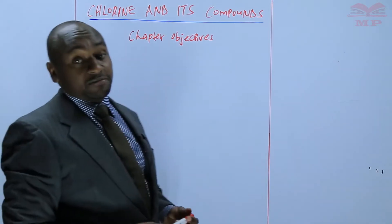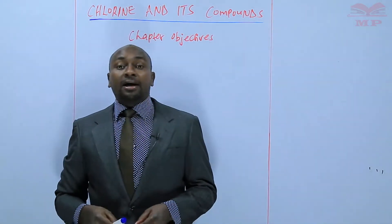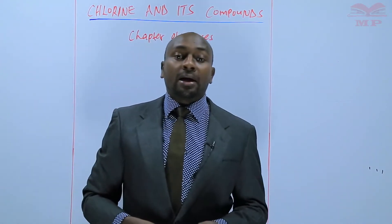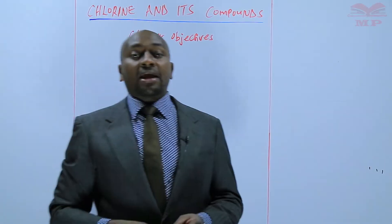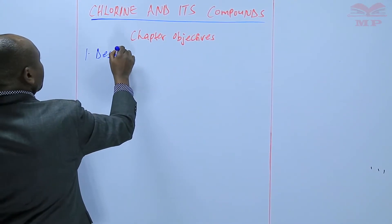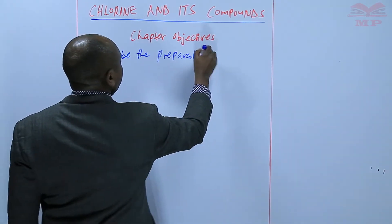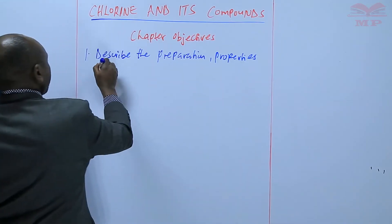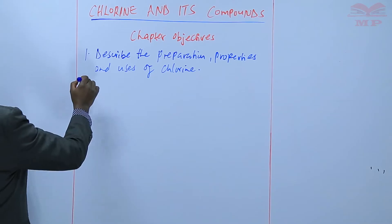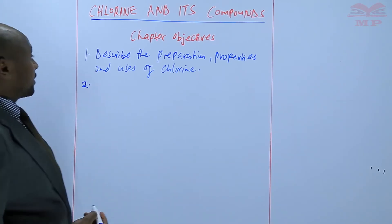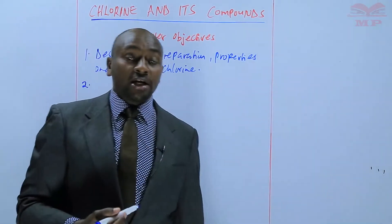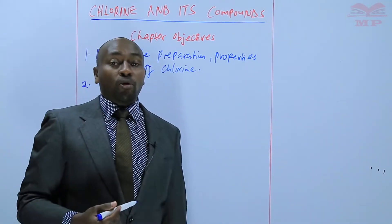The first objective: a learner should be able to describe the preparation, properties, and uses of chlorine. The second objective is also to be able to describe the preparation of hydrogen chloride, which is one of the compounds of chlorine.